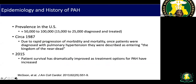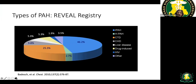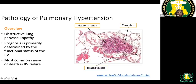Group one PH prevalence is about 100,000 cases and is increasingly diagnosed. The majority are idiopathic; the second most common cause is connective tissue disease such as lupus and scleroderma. Other causes include liver disease, drug abuse, and HIV. Histologically, the pulmonary vessel lumen is obliterated by plexiform lesions — slit-like channels with no real lumen, sometimes with thrombus — and as more lung is involved, right heart failure ensues.